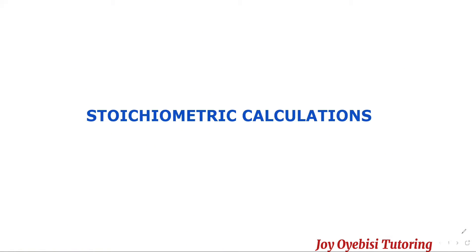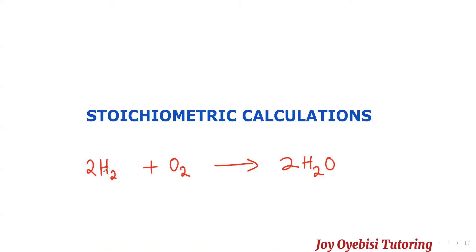When you have a chemical reaction, stoichiometry is the relationship between the quantities of the reactants and products. For example, if you have H2 plus O2 to give us two H2O, this would be the balanced equation. The relationship between hydrogen and oxygen — this stoichiometric relationship — would be a two-to-one ratio. And then the relationship between oxygen and water is going to be a one-to-two ratio.